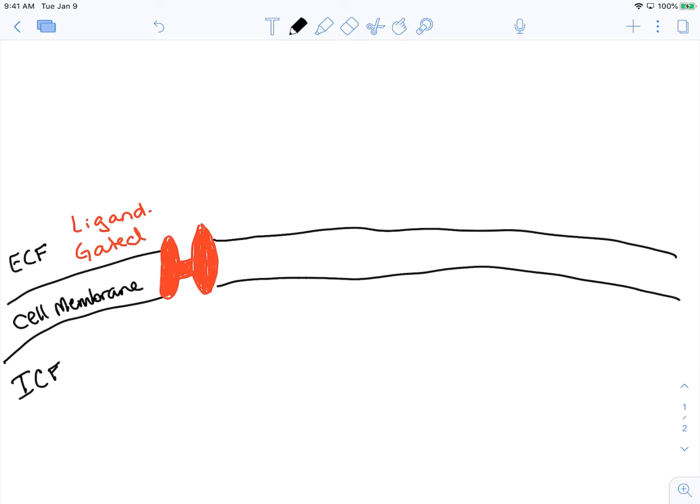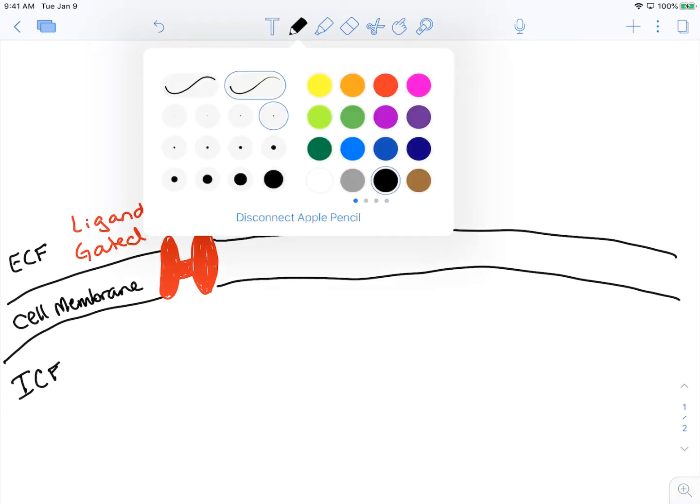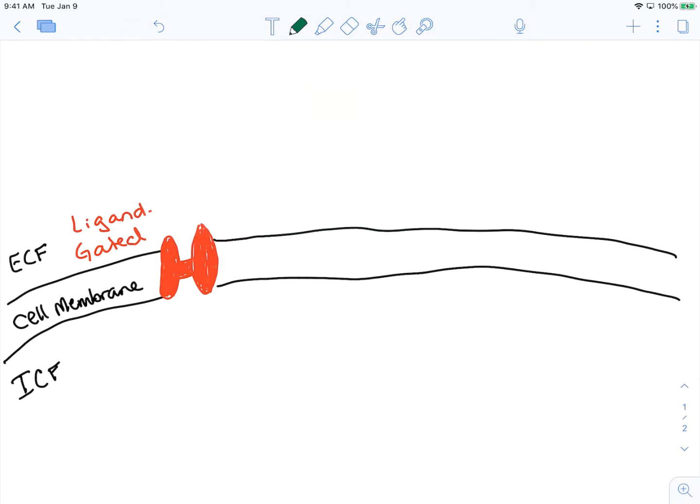The next type of channels I want to talk about are what we call leak channels. We're going to start with a leak channel here and let me diagram it in. This first leak channel is going to be a potassium leak channel. Leak channels are selective and specific for what molecule can pass through them. The ion channel I've drawn in green is my potassium leak channel.